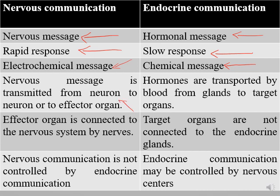Nervous messages are transmitted from one neuron to another, or from a neuron to an effector organ, whereas hormones are transported by blood from glands to the target organs. The effector organ is connected to the nervous system by nerves, whereas target organs in endocrine communication are not connected to the endocrine glands. Nervous communication is not controlled by the endocrine system, whereas the endocrine system may be controlled by nervous centers.